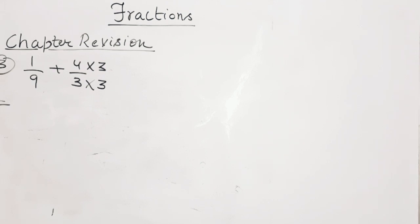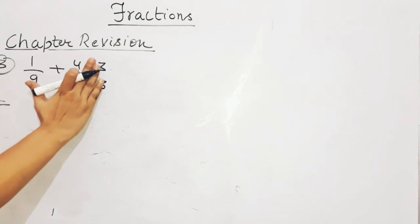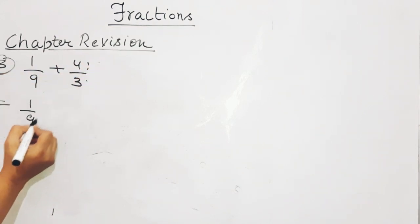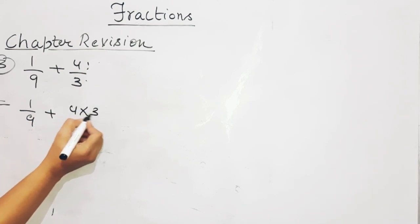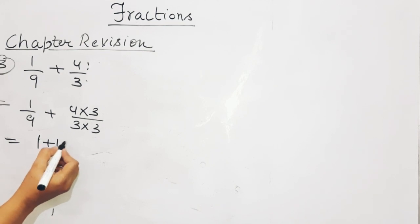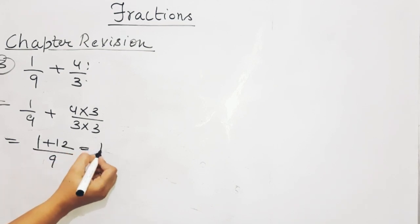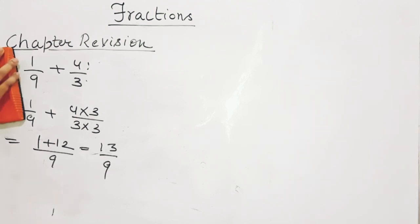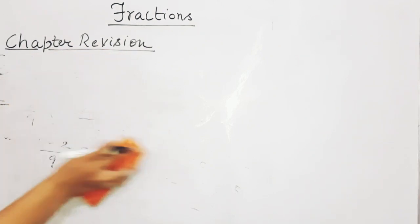The LCM of 3 and 9 is 9. To make the denominator 9, we multiply 4/3 by 3, giving 12/9. So the expression becomes 1 plus 12 upon 9, and the answer is 13 upon 9.